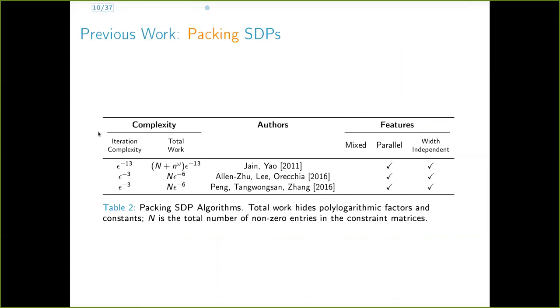We now look at the previous work in the case of packing SDPs. Recall again, before our work, there did not exist efficient width-independent algorithms for covering SDPs. In this setting, the width is defined to be the largest spectral norm of all constrained matrices. The first width-independent algorithm for packing SDPs was by Jane and Yao. Recently, their runtime was significantly improved by the work of Alan Zhu, Lee, and Orekia, and separately by Peng, Thang Wong-san, and Zhang.